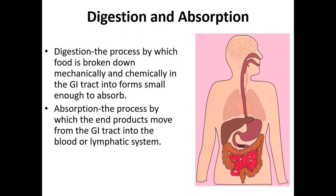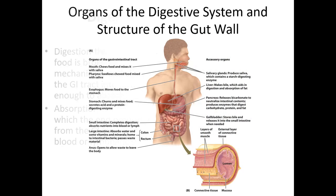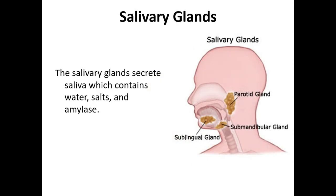Here is the definition of digestion: the breaking down and absorption — the moving into the body proper. Be sure to know the order of the digestive organs. We'll be talking through this, but you should study those before the test. We'll start with the mouth, where we see two types of digestion: chemical or enzymatic breakdown via salivary amylase, and mechanical digestion — the chewing and crushing.